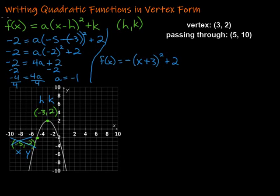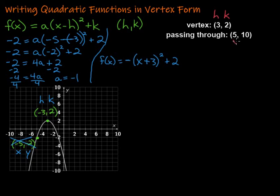Sometimes you might just be given ordered pairs representing the vertex and a point that it's passing through. In some ways we don't have to work as hard because we're just given the values — here we had to go searching. So let's recognize what those values are. The vertex gives us h and k, and it's passing through the point 5, 10, which gives us x and y. And plug it in we go.